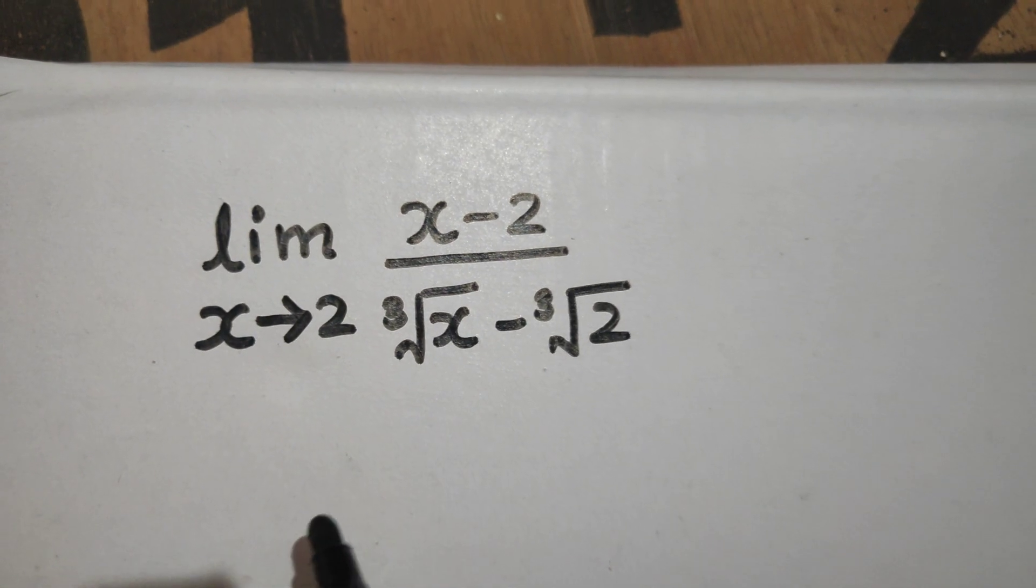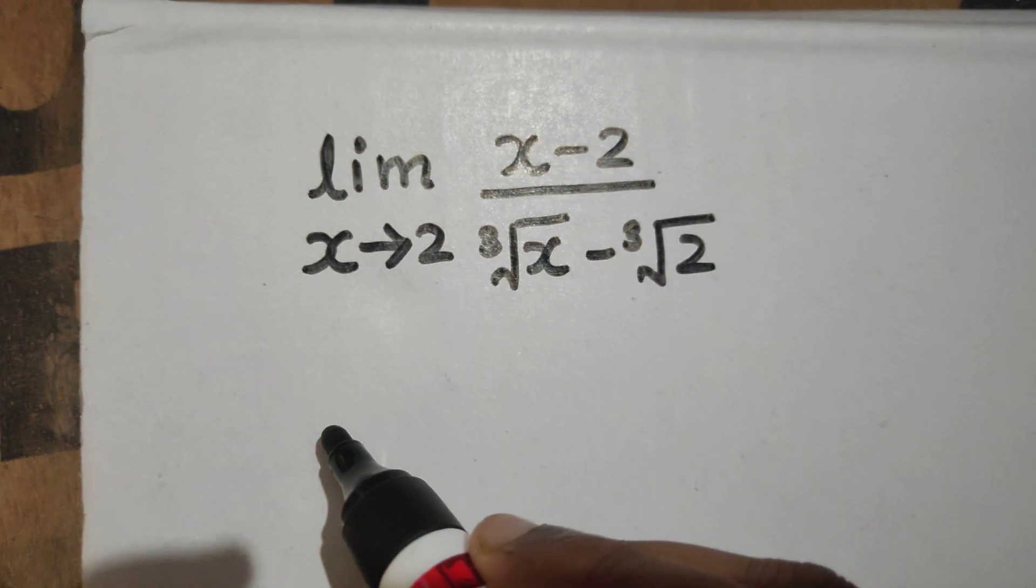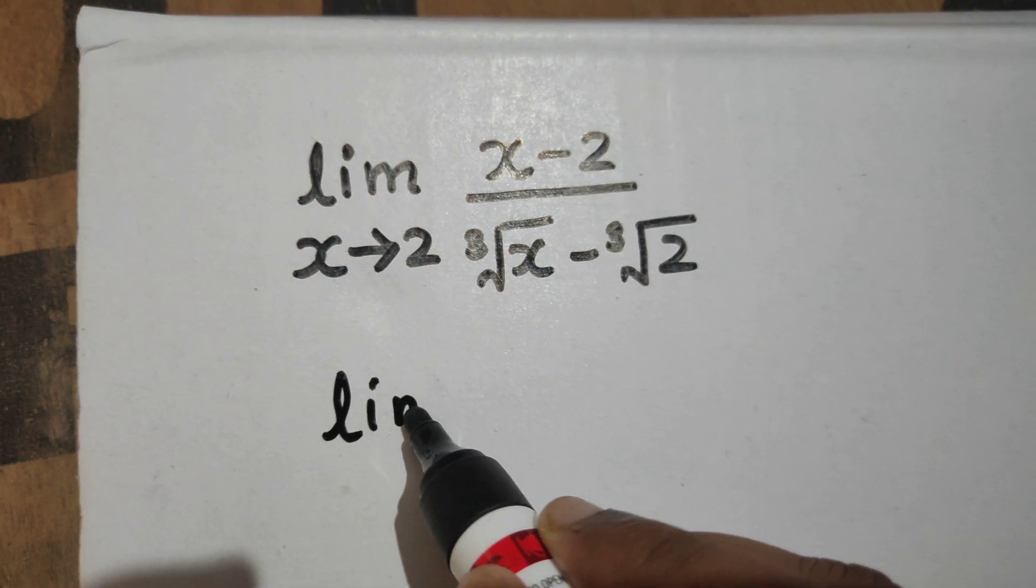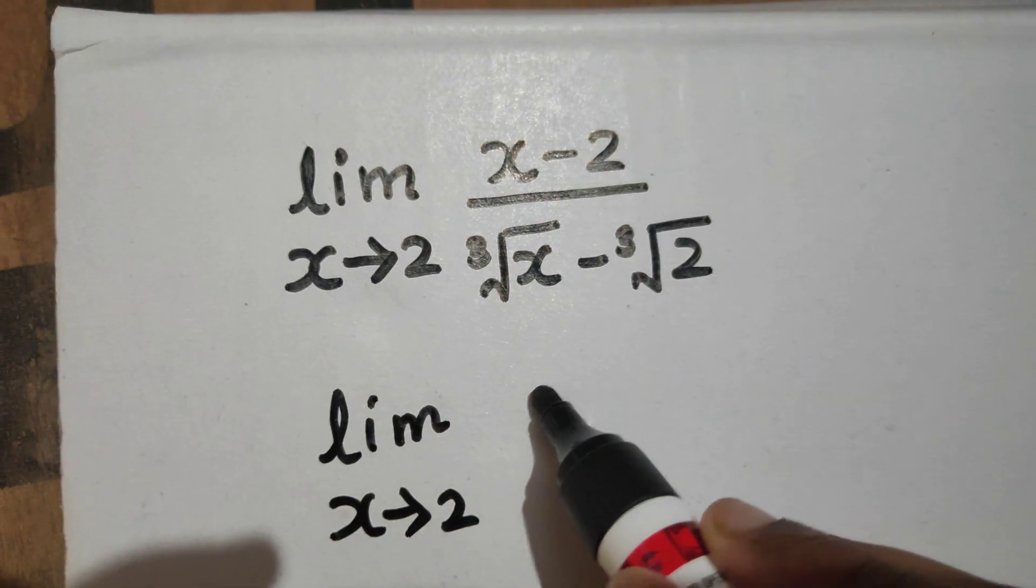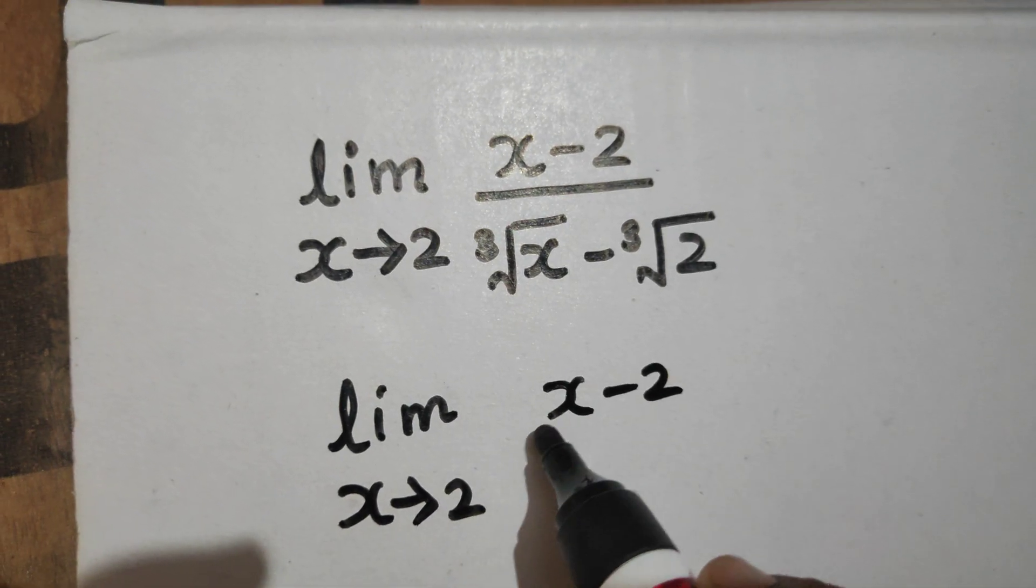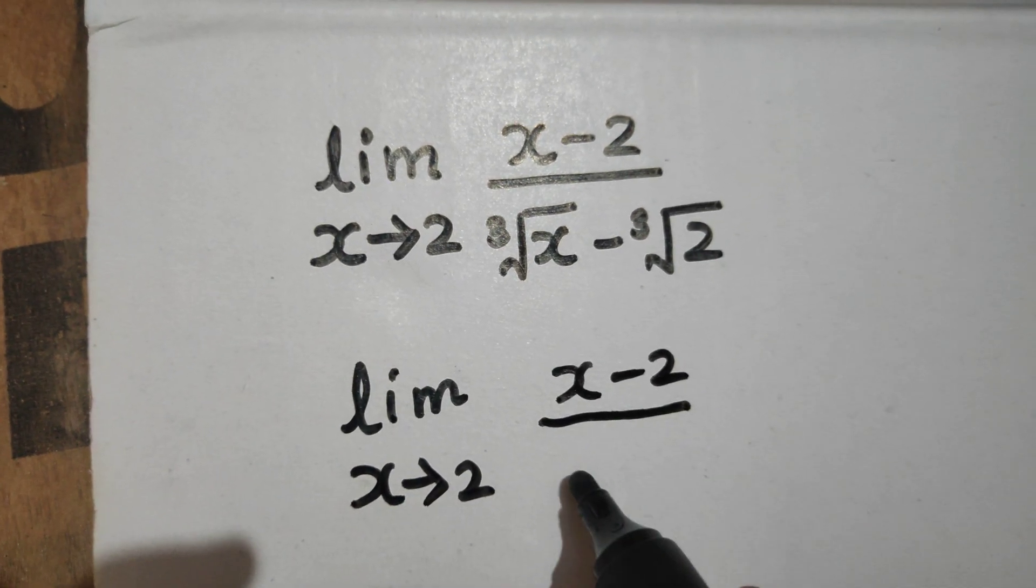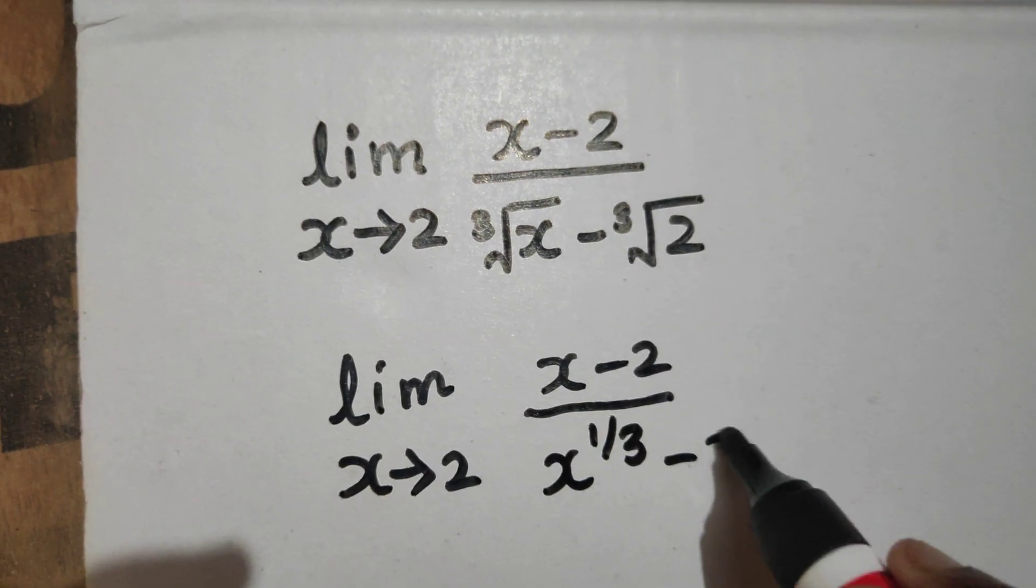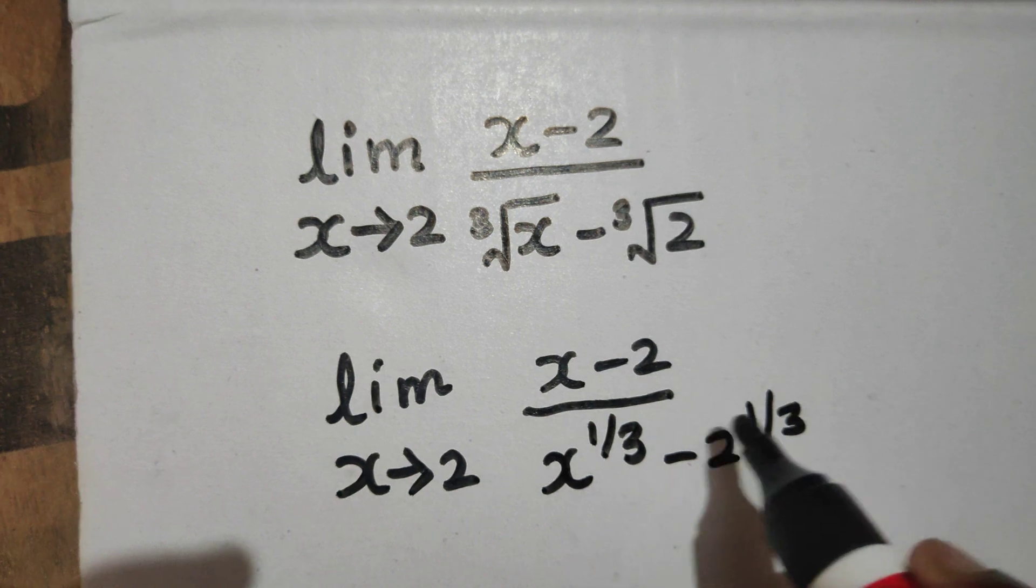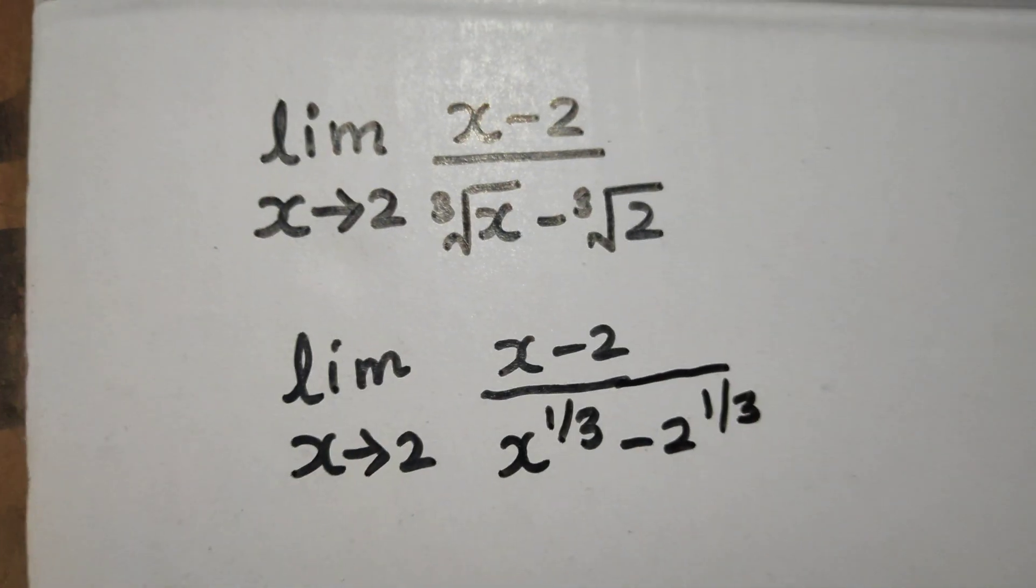So we have this limit. We can write this as limit x tending to 2: x minus 2 divided by x power 1/3 minus 2 power 1/3, isn't it?